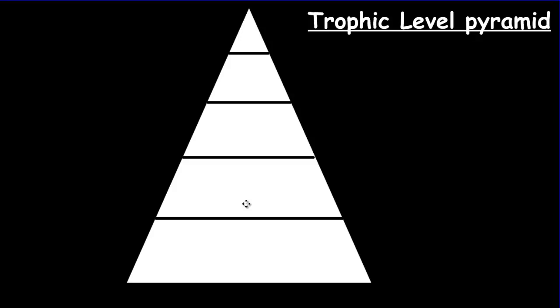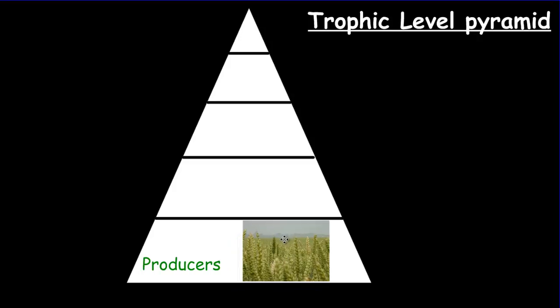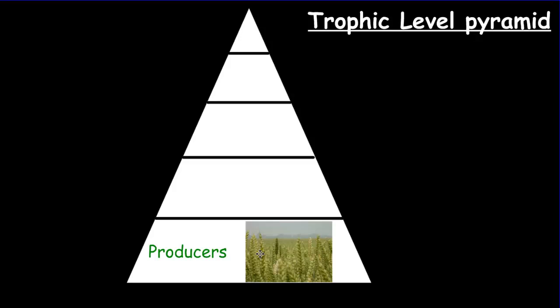Here's our trophic level pyramid in two-dimensional form — we have to envision it in three dimensions. We'll use mass, energy, and numbers together to illustrate this pyramid. At the bottom, the base is the most massive, has the most individuals, and has the greatest amount of energy available. That's where our producers go. The number of individual plants necessary to support an ecosystem is enormous, and they contain the most energy and mass as well.